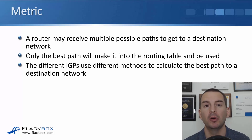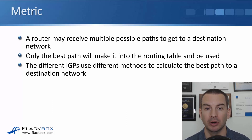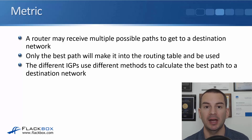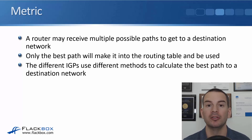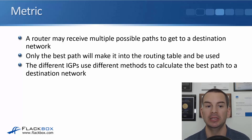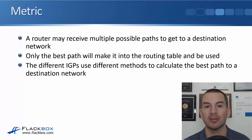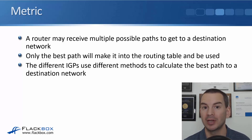A router may receive multiple possible paths to get to a destination network, because it might have multiple different ways it can get to that network. It might have multiple neighbouring routers with paths available through all of them. Only the best path out of all the ones that the router knows about is going to make it into the routing table and be used. The different interior gateway protocols need some way of determining which is the best path, and they all use different methods to calculate that.